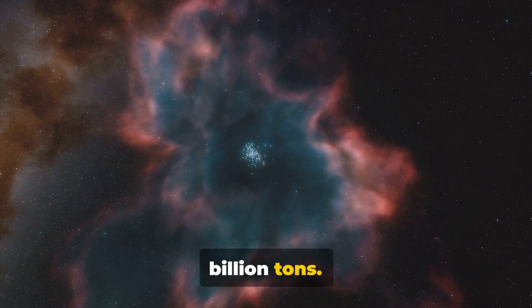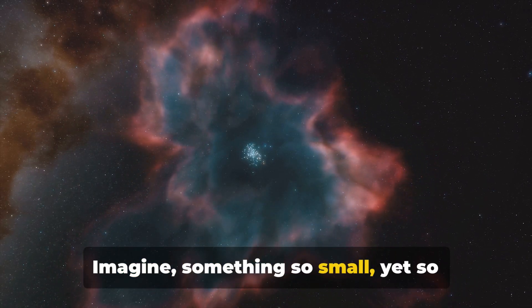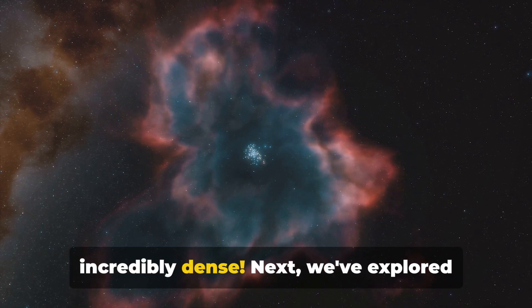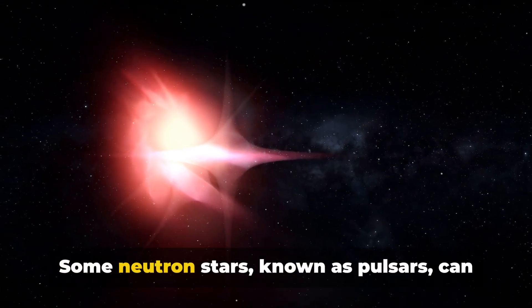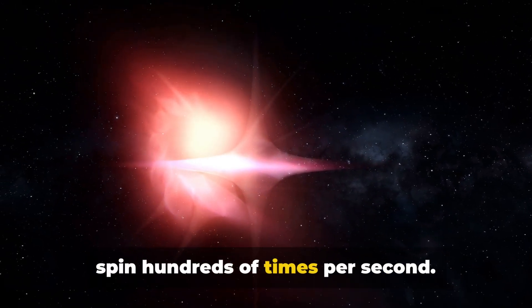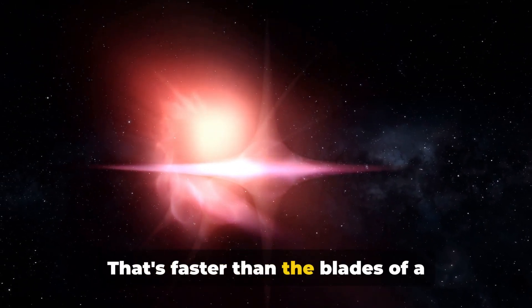Imagine something so small yet so incredibly dense. Next we've explored their extreme rotation speeds. Some neutron stars known as pulsars can spin hundreds of times per second. That's faster than the blades of a domestic blender.